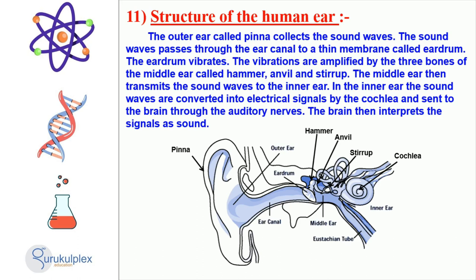Inside the inner ear, the cochlea converts the sound waves into electrical signals and sends them to the brain via the auditory nerves. The brain interprets the signals and allows us to hear.